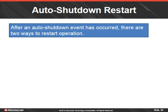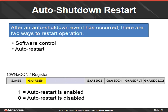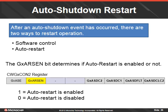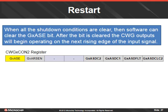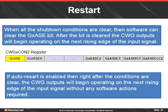After an auto shutdown event has occurred, there are two ways to restart operation: software control and auto restart. The G-ARSEN bit determines if auto restart is enabled. Setting it to 1 will enable auto restart. When all shutdown conditions are clear, software can clear the G-ASE bit. After the bit is cleared, the CWG outputs will begin operating on the next rising edge of the input signal. If auto restart is enabled, then right after the conditions are clear, the CWG outputs will begin operating on the next rising edge of the input signal without any software actions required.